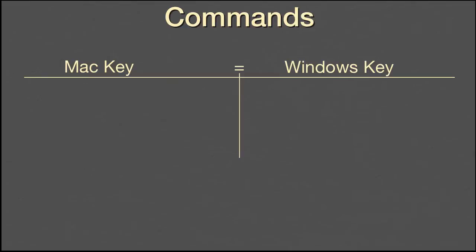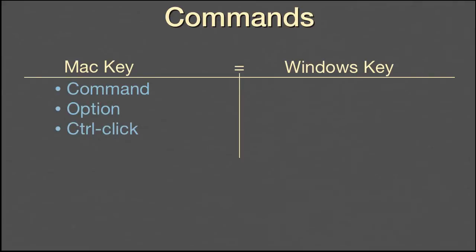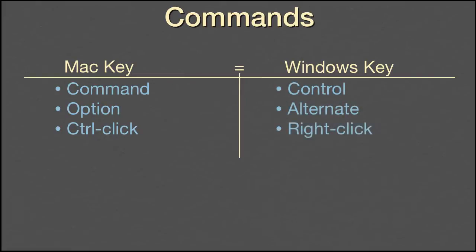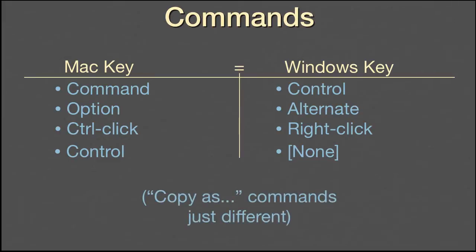Another area that is a little different are the commands. Windows uses a slightly different set of keyboard shortcuts, so we modified ours to fit. In almost every case, we were able to map the Mac Command, Option, and Control Click keys to the equivalent Windows Control, Alternate, and Right Click keys. Windows does not offer a convenient substitute for the Mac Control key, so we simply eliminated those keyboard shortcuts in our Windows version. However, the various Copy As commands are so useful, we just couldn't bear to leave our Windows users without them, so they're simply different from the Mac program. Users will simply have to memorize those.